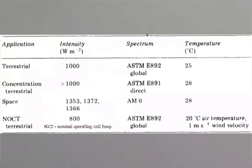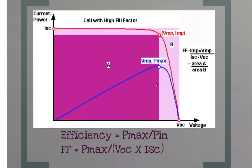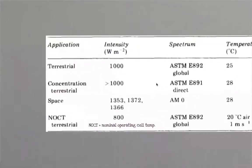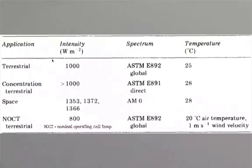To do these measurements we also need to account for the illumination itself. There are many ways — we can have intensity in watts per meter squared, spectrum, and temperature of the cell; all are important parameters that affect measurements. For intensity on Earth, we want about 1000 W/m². For spectrum there's a standard AM1.5. The temperature of the cell is typically 25°C.